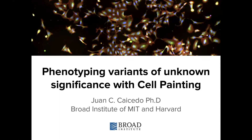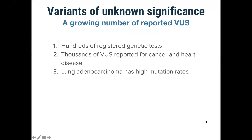Genome sequencing efforts have identified millions of somatic mutations in cancer, and most of those mutations are of uncertain significance. At the same time, hundreds of genetic tests are being registered every year, and thousands of variants are reported for cancer, heart disease, and rare diseases. Given that we have a poor understanding of what variants are important in order to treat some of these diseases, we need methodologies to scan and understand the functional impact of those mutations.